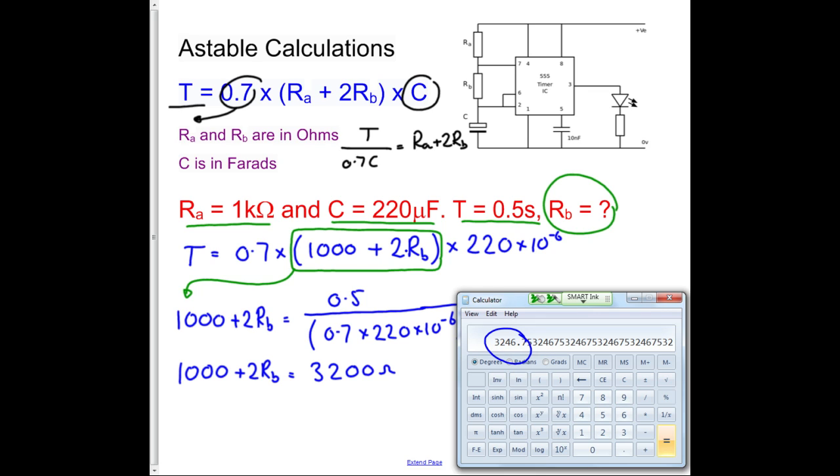Now, I can now do a little bit more manipulation, take the 1,000 over that side, so I get 2RB equals, the 1,000 becomes a minus, so I get 2,200. And that's 2RB, so I need to divide by 2, so RB equals 1,100 ohms.